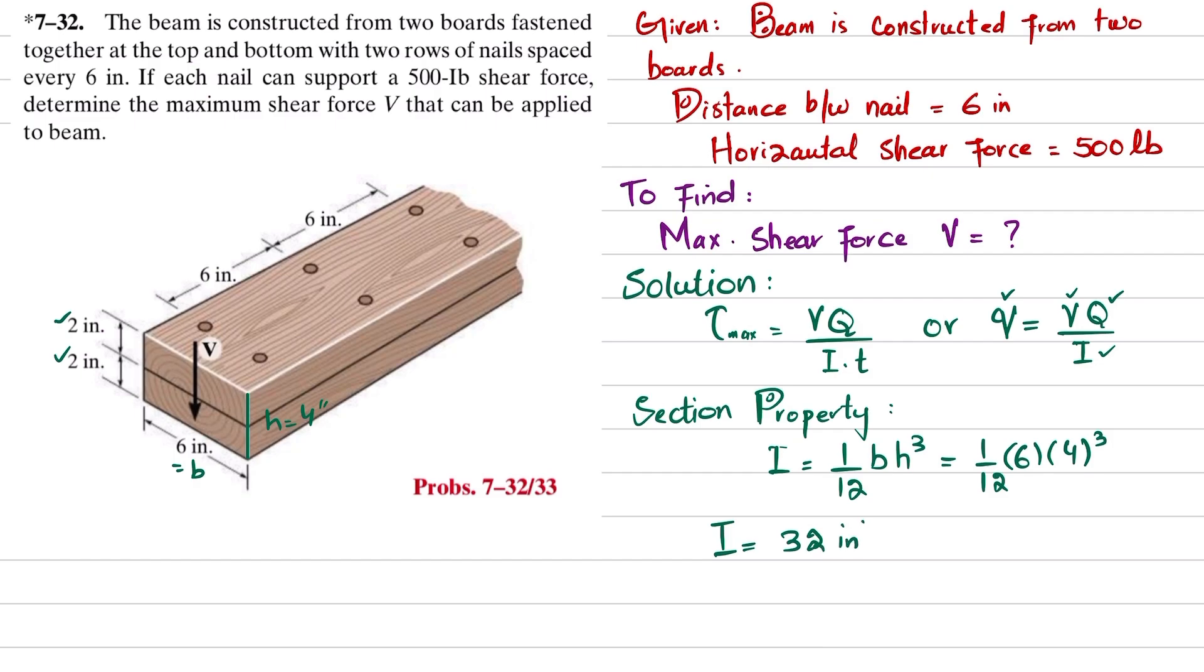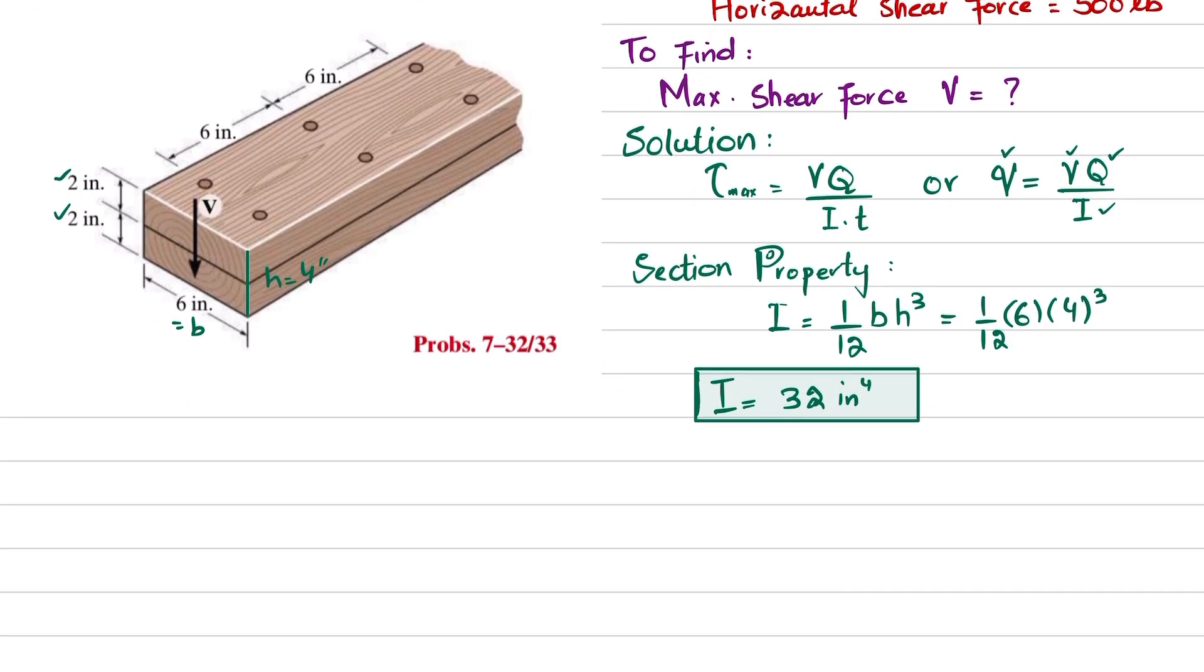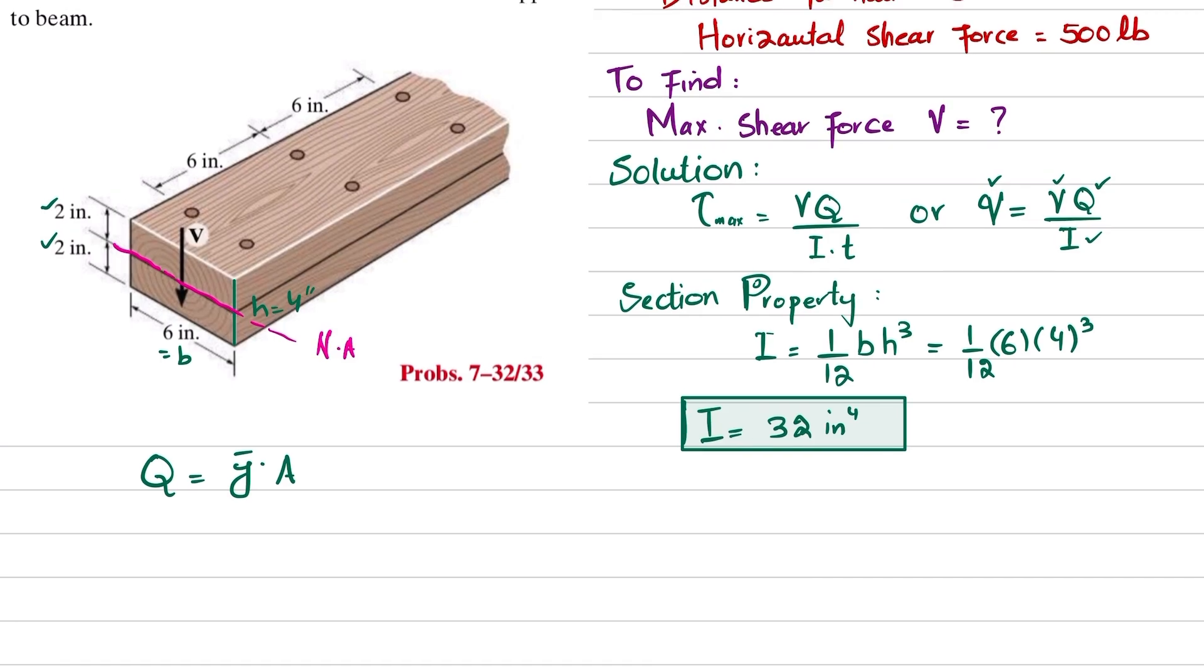Now you have this I, you will find Q. We know that Q is equal to y-bar dash into A. You can see its neutral axis will be this one, passing through the centroid. Above the neutral axis, this area is our required area, and this area is equal to 2 into its width, which is 6, and that equals 12 square inches.